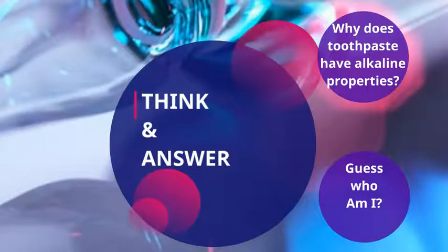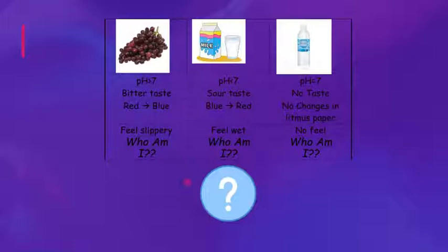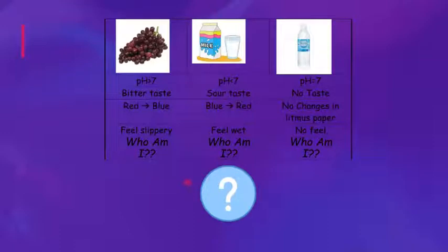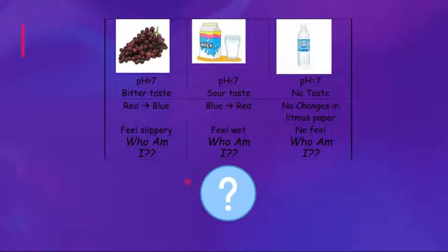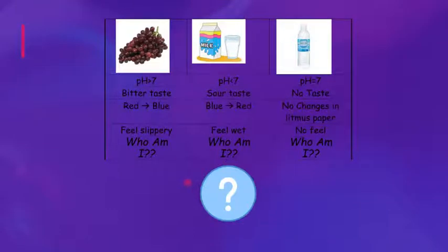The second question: guess who am I? Number one — pH more than 7, taste is bitter, changes litmus paper from red to blue, feels slippery. That's right, it's alkaline. Number two — pH less than 7, sour taste, changes litmus paper from blue to red, feels watery. That is acidic. Number three — pH equal to 7, no taste, no changes in litmus paper, no feel. That is a neutral substance.